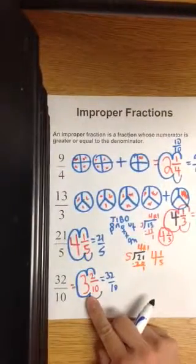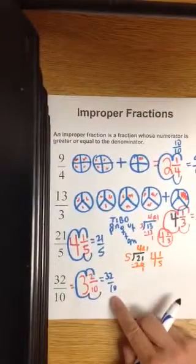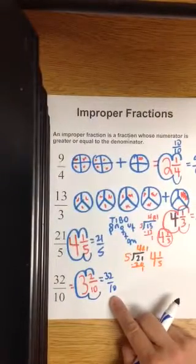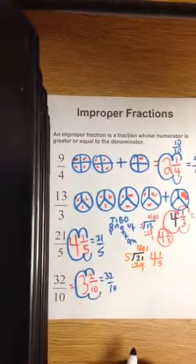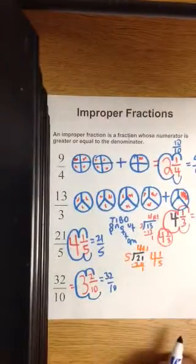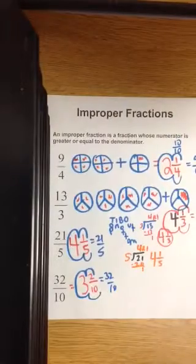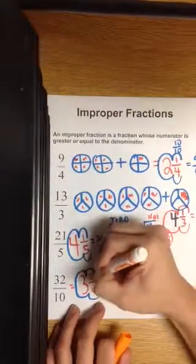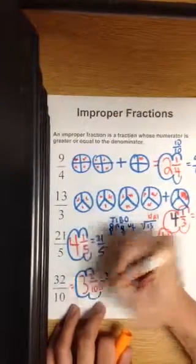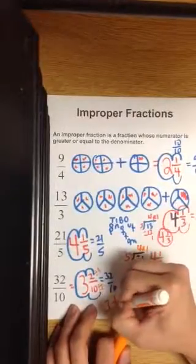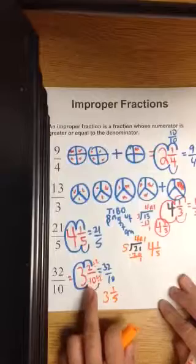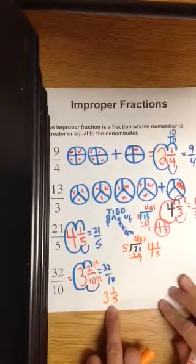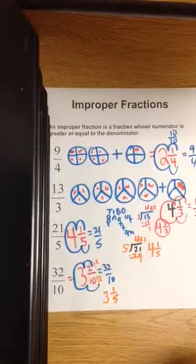So this mixed number, three and two tenths, is the same as this improper fraction, 32 tenths. Hey, did you know you can simplify three and two tenths? Aren't they both even? Even numbers can be divided by two. So if you divide this by two, it's also equivalent to three and one fifth. So 32 tenths is the same as three and two tenths, which is the same as three and one fifths. So many equivalencies.